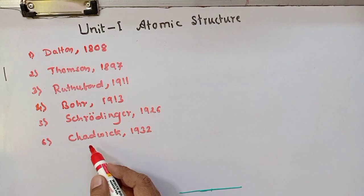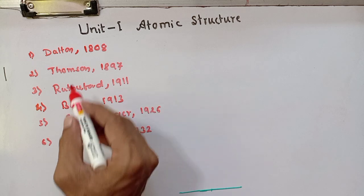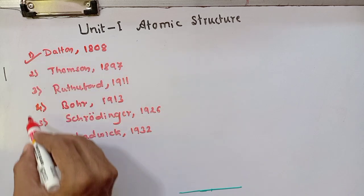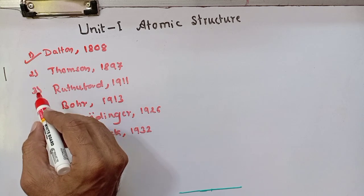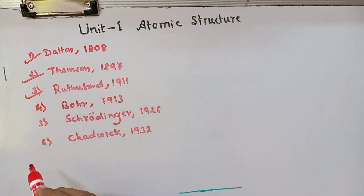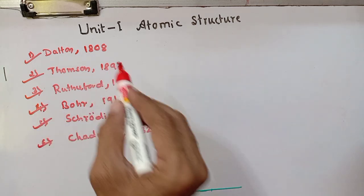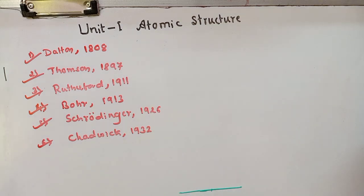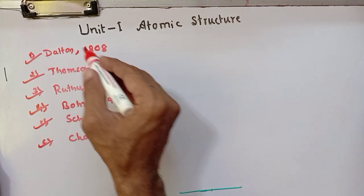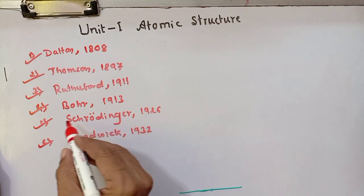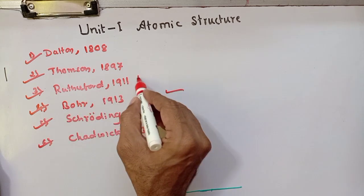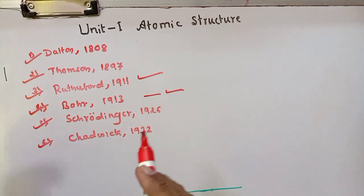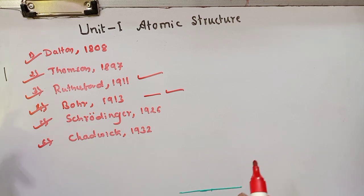In order to explain the basic structure of atom, a number of scientists put forward their theories: Dalton in 1808, then Thomson in 1897 with his Plum Pudding model, then Rutherford's nuclear model in 1911, followed by Bohr's model, then Schrödinger and Chadwick. For B.Sc. first semester, Bohr's atomic model is kept for study. Before going to Bohr's model, we start with Rutherford's model because it first clearly explained the arrangement of all three fundamental particles.